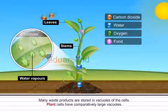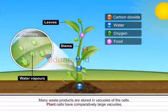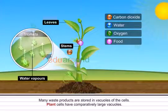Number two, many waste products are stored in vacuoles of the cells. Plant cells have comparatively large vacuoles.